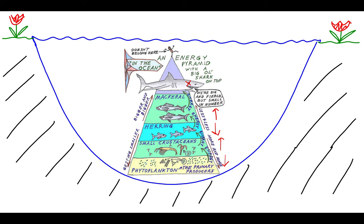We've actually seen this happen in Wisconsin with gray wolf hunting. As we opened up hunts on gray wolves and killed them off, deer populations increased, which had a negative effect on farmers and agriculture. That's again because of the trophic cascade. That's it for today — we are done with trophic dynamics. I hope this all made sense. As always, if you have any questions please let me know. Take care.